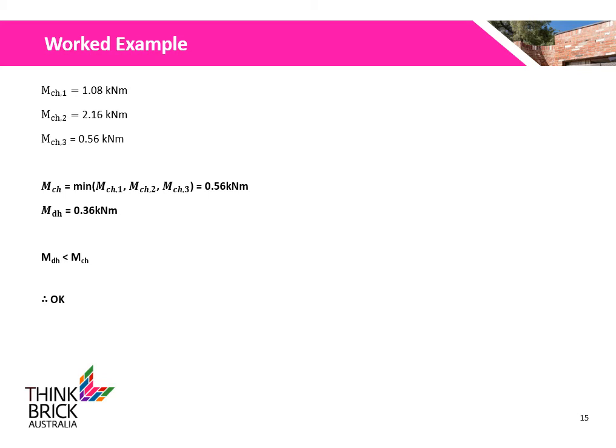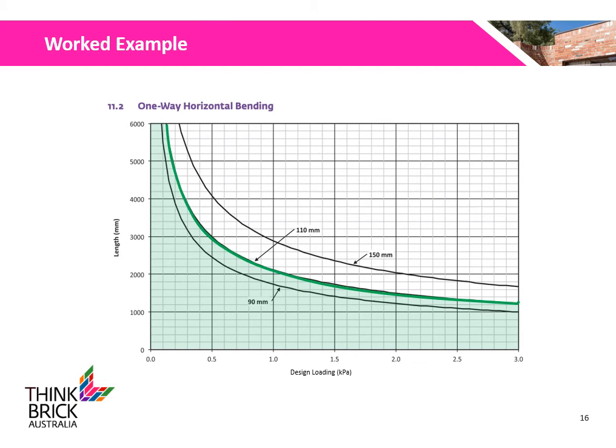As the design bending moment is less than the horizontal bending moment capacity, the wall is okay for the given design loading. A design chart from the TBA 04 manual — available on the TBA website — can also be used. Anything below the chosen curve is deemed acceptable. Here, a 2.4m long wall using standard 110mm thick bricks is okay for a design loading of 0.5 kPa.